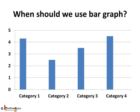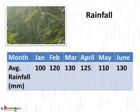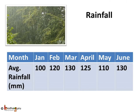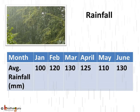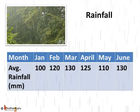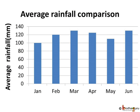So firstly, when should we use a bar graph? Here we have data of average rainfall for six months. We want to make a comparison using a graph. We have two kinds of data: name of months and average rainfall for each month. The average rainfall in January was around 100 mm, in February it was around 120 mm, March it was 130 mm, in April around 125 mm, for May it was 110 mm, and for June it was 130 mm. Here it makes better sense to use a bar chart or bar graph, because a bar graph is used to show comparison among categories. This bar graph compares average monthly rainfall of a region for the last six months.